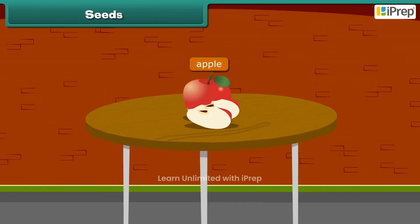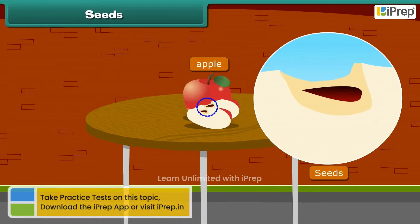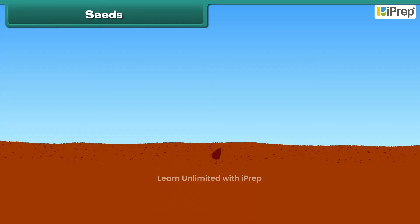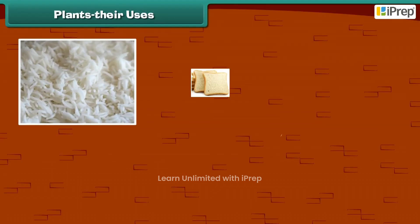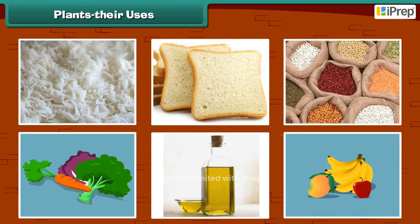When we cut an apple, what do we see at the center? We see small dark brown seeds. Other fruits also have seeds inside them, such as papaya and mango. A new plant grows from a seed.